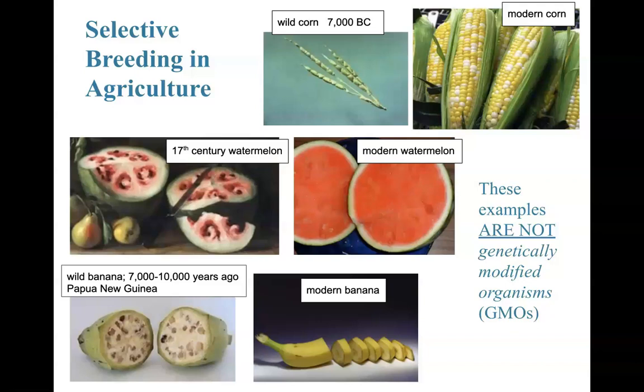What isn't a GMO? Selective breeding is an example. You're choosing the genes to get passed on, like Mendel selectively bred his pea plants. Humans have selectively bred food to increase production. They're not genetically modifying genes — that technology didn't exist yet — but they are selecting the genes to get passed on to the offspring.